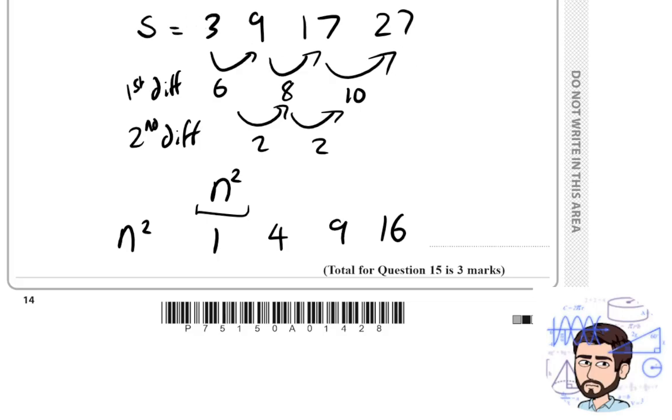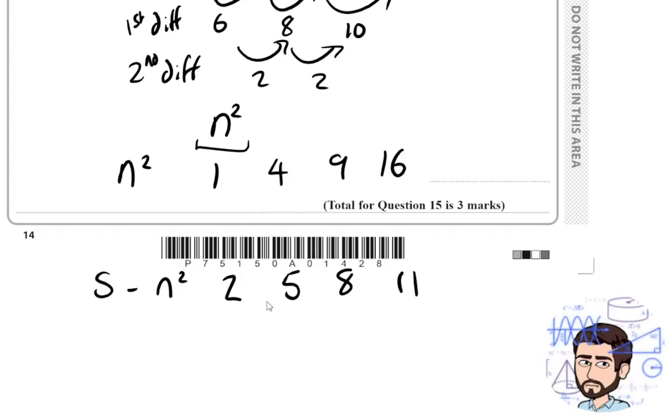What we could do is take our original sequence, let's call it S, and we could subtract the squared numbers to figure out what is the difference between these two sequences. What number will take me from 1 to 3? It's 2, you add 2. 4 to 9, you add 5. 9 to 17, you would add 8. And 16 to 27, you would add 11.